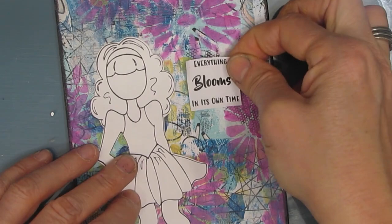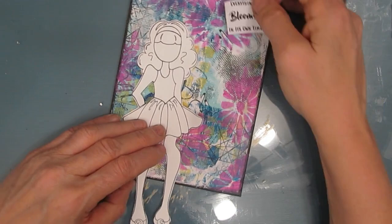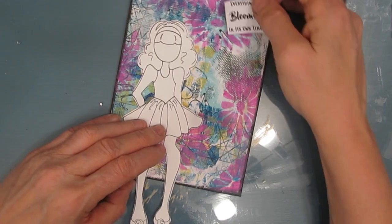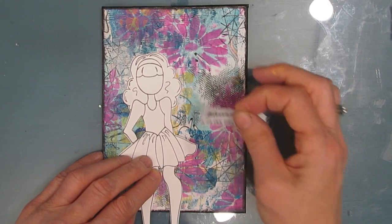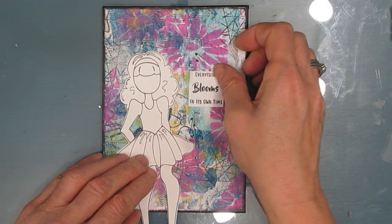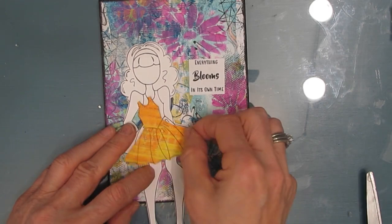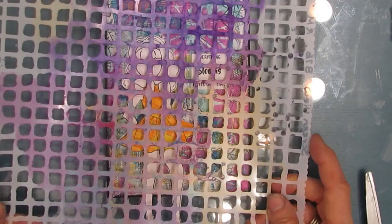So I'm just finalizing the positioning of the sentiment and my girl here. Which sometimes takes me a long time. And I realized that my sentiment was on sticker paper. Now I know I'm going to paint my Julie Nutting Doll. But I also remember that I had some stamped dresses that I stamped out of gel prints. And I found a yellow one, which is what I was going to paint it. So instead of painting it, I'm just going to glue that down.